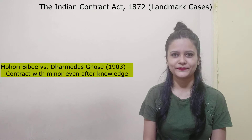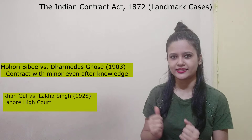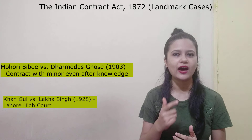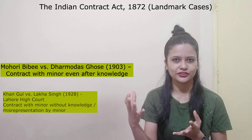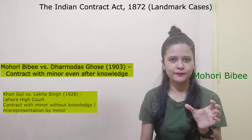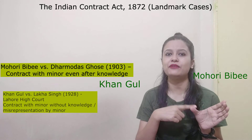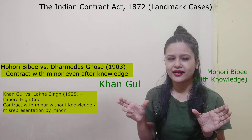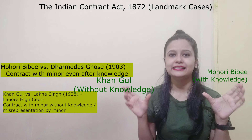In today's video, we are going to discuss the famous case of Khangul vs. Lakhassin. This is a case of 1928 and it was decided by the Lahore High Court. This case relates to a contract with a minor without knowledge — meaning the minor is misrepresenting his age and I do not know that I am entering into a contract with a minor. The basic difference between the Mohri Bibi case and the Khangul vs. Lakhassin case is that in Mohri Bibi, I had knowledge I was making a contract with a minor, while in Lakhassin, I had no such knowledge.